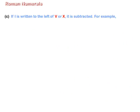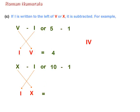C. If I is written to the left of V or X, it is subtracted. V minus I or 5 minus 1 is equal to 4 (IV). X minus I or 10 minus 1 is equal to 9 (IX).